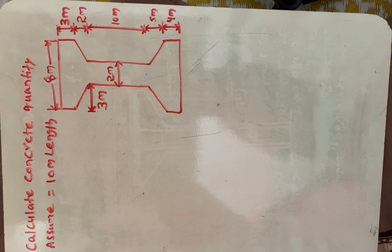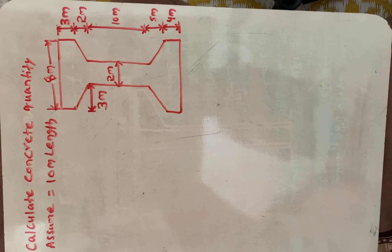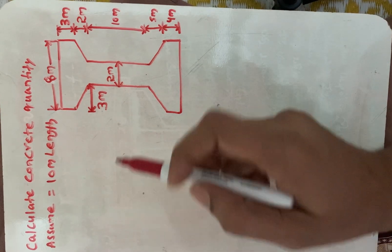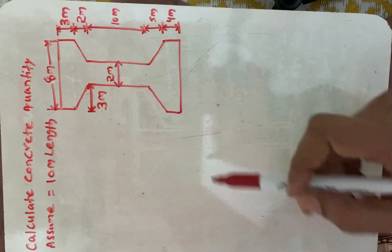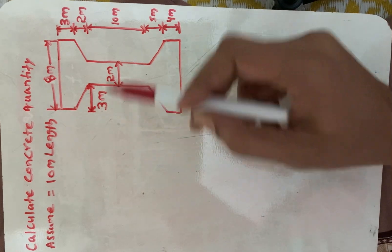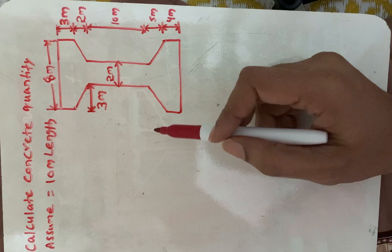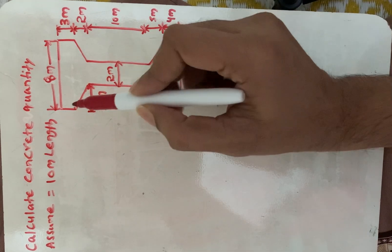Hello everyone. In this video I will show you how to calculate concrete quantity for this composite section. Here I am assuming length is 10 meters. This is the girder, which is a composite shape — different kinds of shapes are combined. So first we have to divide this type of structure into sections.